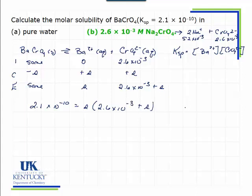Here we're going to make an assumption. We're going to assume that S is much smaller than 2.6 times 10 to the minus 3. That's a little questionable. This is a pretty small number. Is S really going to be much smaller? At least let's start so we can avoid the quadratic. We'll have to check and see if it works.